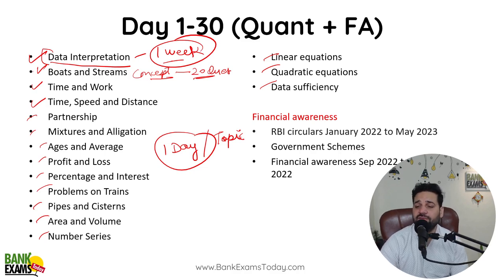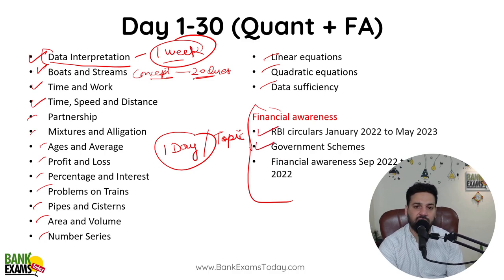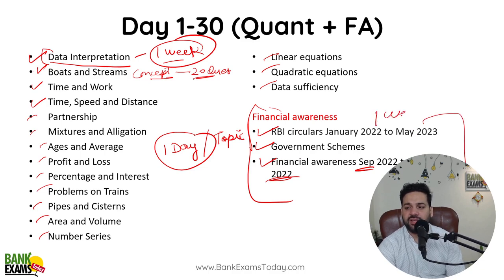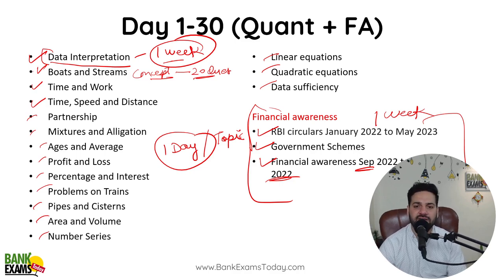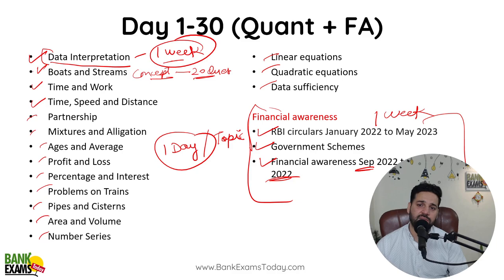After covering quant topics, you will still be left with about 7-8 days. In those days, cover RBI circulars from January 2022 till May 2023, important government schemes, and financial awareness from September 2022 till December 2022. You can easily do all of that within one week. So the plan for the first 30 days is: start with quantitative aptitude, give one week to data interpretation, and use the remaining week for financial awareness.